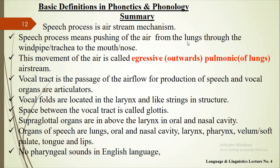This is called the air stream mechanism or the production of human speech sounds. The movement of air is called the egressive pulmonic air stream, and the vocal tract is the passage for the flow of air for the production of human speech sounds. Vocal organs are the different articulators like lips, tongue, and teeth. Vocal folds are located in the larynx and are like strings in structure; they are responsible for producing vibration and for voiced and unvoiced kinds of sounds. The space between the vocal folds is called the glottis. Supraglottal organs are above the larynx in the oral and nasal cavity.